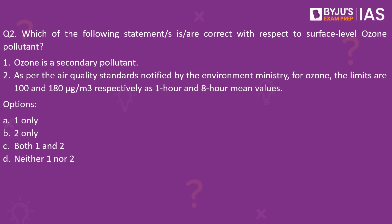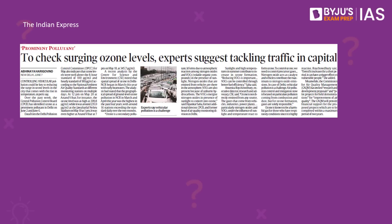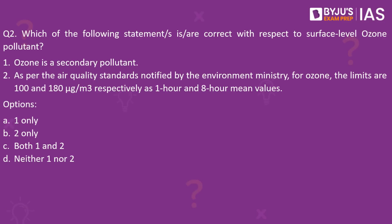Moving on to the second question: Which of the following statements is or are correct with respect to surface-level ozone pollutant? Statement 1 reads — ozone is a secondary pollutant. Statement 2 reads — as per the air quality standards notified by the Environment Ministry for ozone, the limits are 100 and 180 micrograms per meter cube respectively, as 1-hour and 8-hour mean values. The context is an Indian Express article noting increasing ozone levels in the national capital region of Delhi. Considering the first statement — ozone is a secondary pollutant — this is correct. Secondary pollutants are those which are not emitted directly from a source but are formed in the atmosphere.